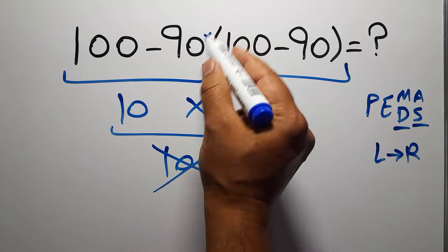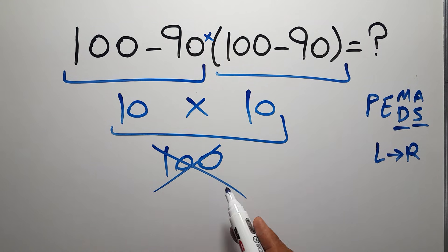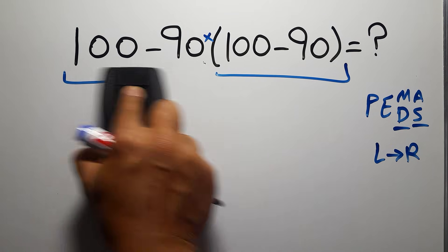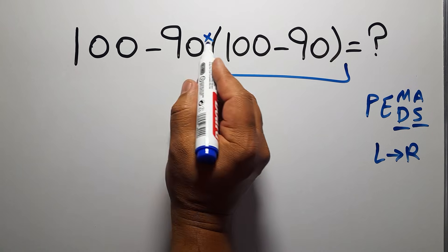So first this parentheses, then this multiplication, and finally this subtraction. We need to pay attention that here we have a multiplication.